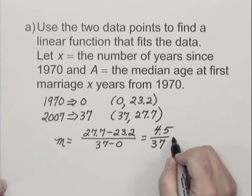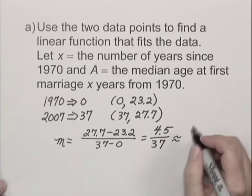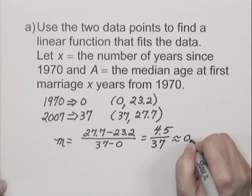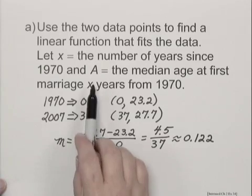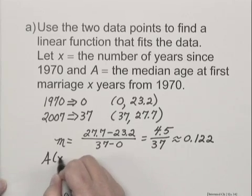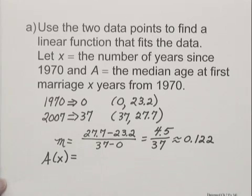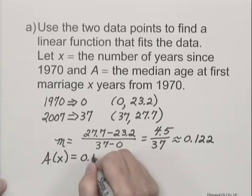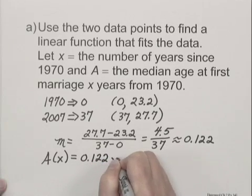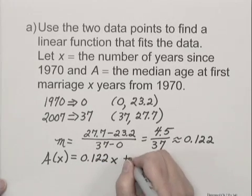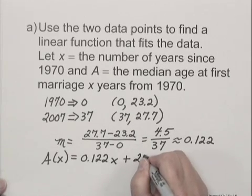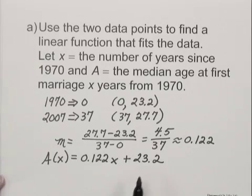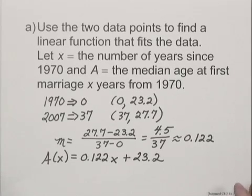And when we do that division, let's round to the nearest thousandth, we would have 0.122. Now we need to write the function and the function would be A(x) = mx + b. Well here's m, 0.122 times x plus, and we are given the y-intercept (0, 23.2), so we write 23.2. And this is a linear function that fits the data.